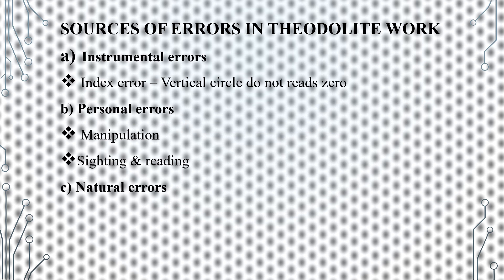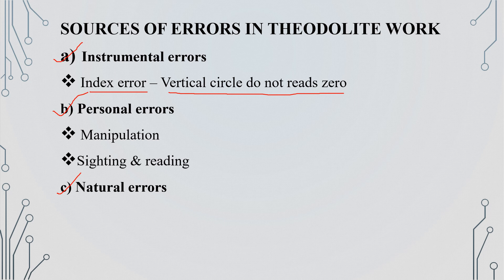We are going to cover the sources of errors. There are normally three sources: the first is instrumental errors, the second is personal errors, and the third is natural errors. The main instrumental error is the index error — related to the vertical circle zero reading. Personal errors include manipulation of sighting and reading. Natural errors include temperature, refraction, and lighting.